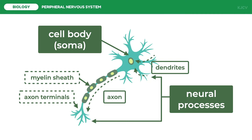A neuron may terminate on one of three structures: a muscle, a gland, or another neuron. Therefore, depending on where a neuron terminates, it can cause a muscle to contract, a gland cell to secrete, another neuron to convey an electrical message along a nerve pathway, or some other function. The junction between any two excitable cells is called a synapse.